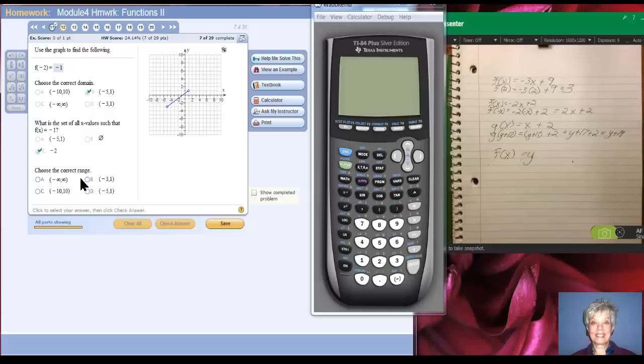There we go again. Choose the correct range. Well, that's the lowest y value to the highest y value. And this goes down to negative 3 and up to positive 1. So clearly, this is the only point. But it's important that because of these open circles, you're going to have to use parentheses.